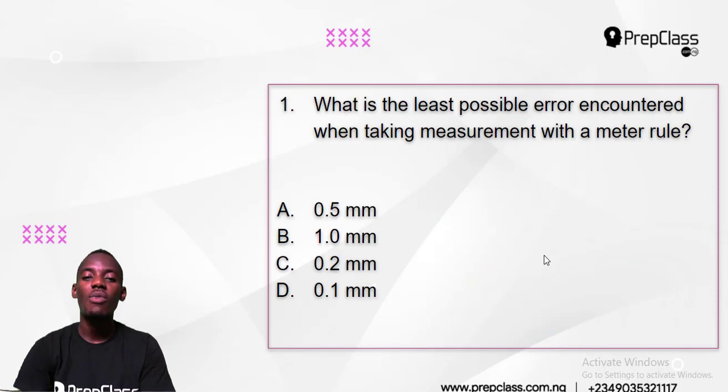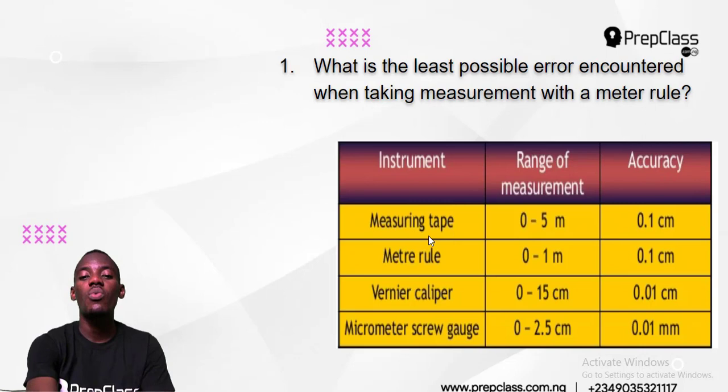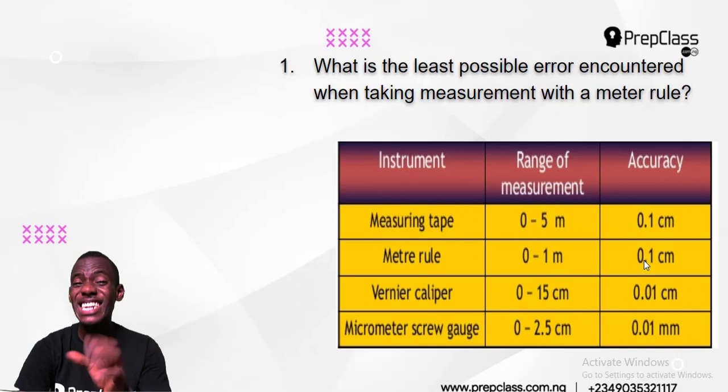Let's get to question number one. Question number one says: what is the least possible error encountered when taking measurement with a meter rule? Do you have any idea which one might be correct — is it 0.5 mm, 1.0, 0.2, or 0.1 for a meter rule? Now if it were a meter rule, the accuracy is 0.1. The accuracy means the least error that can be encountered.